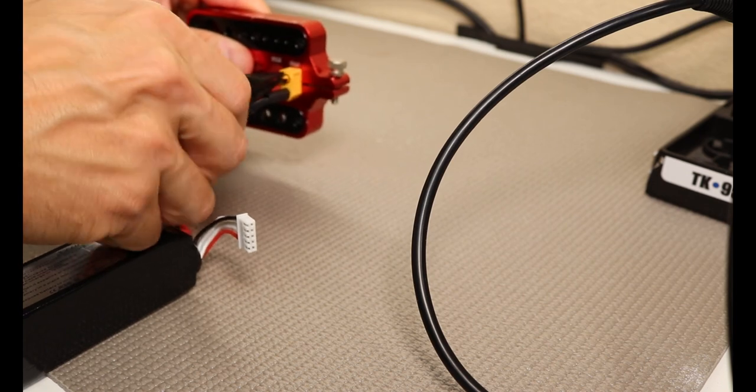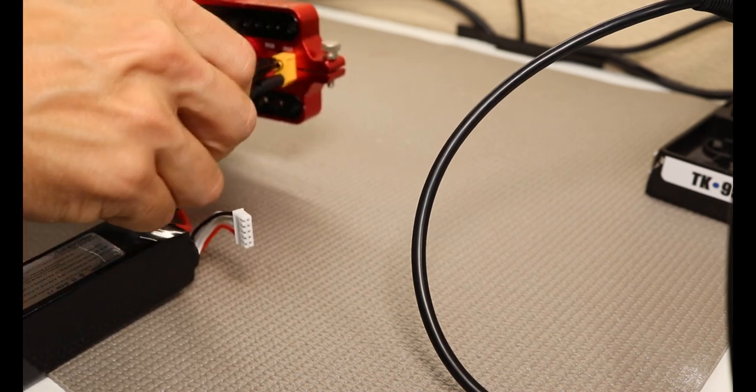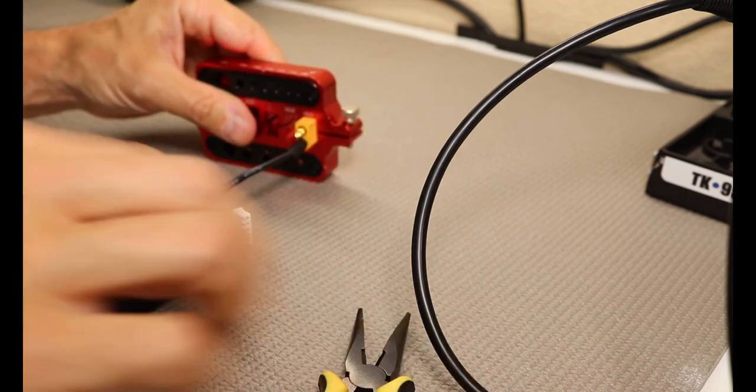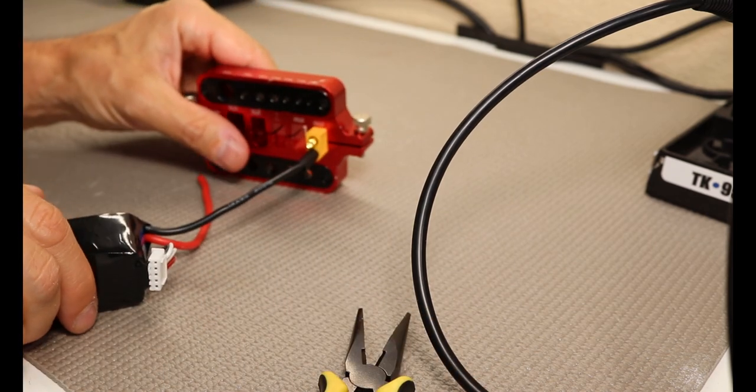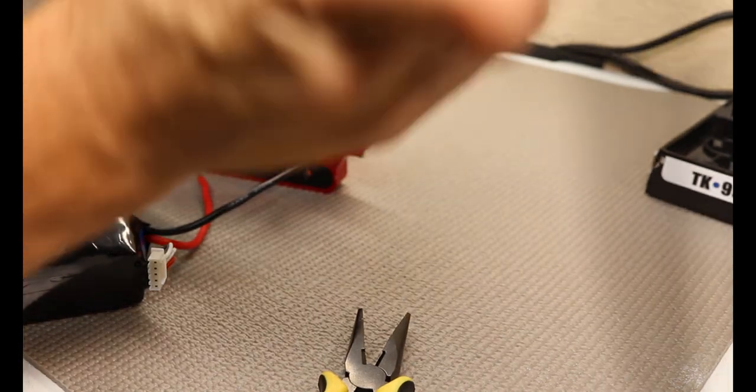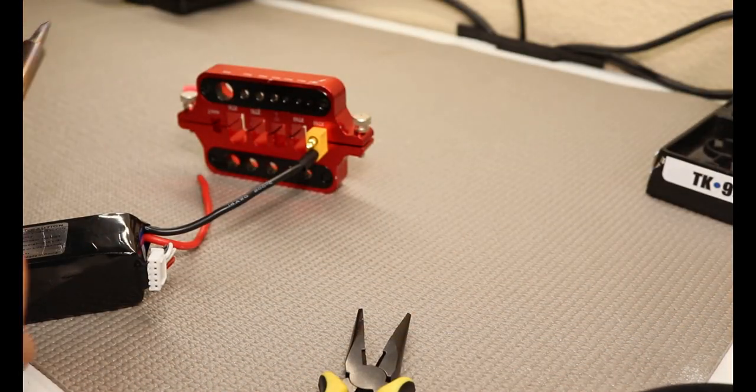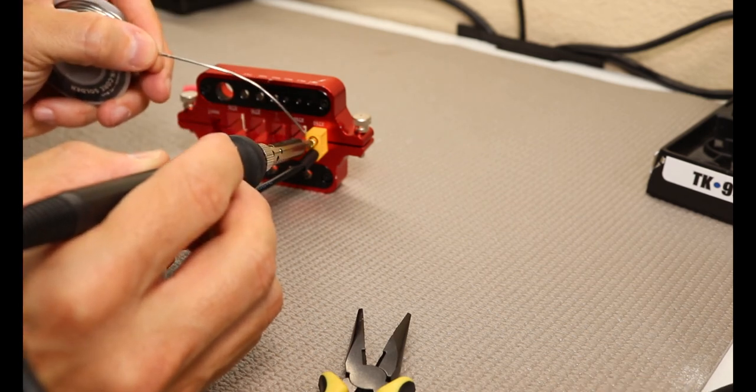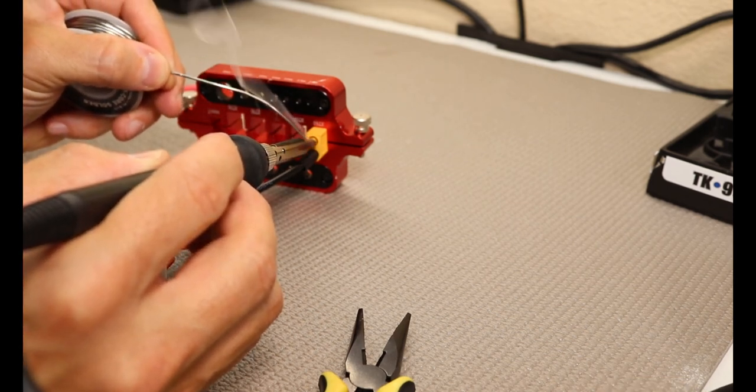So we want to rotate this side now, again so that's facing up. We're going to take our iron, we're going to clean it, we're going to tin it. Now we're going to tin the connector, just a bit of solder.